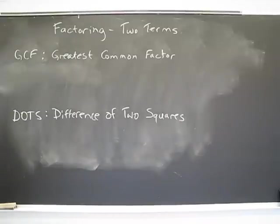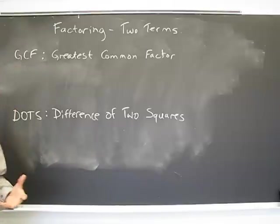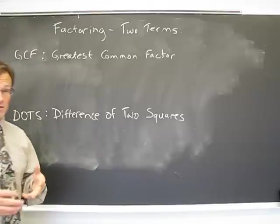So now we want to take a look at factoring, where it starts off. Factoring one term, we talked a little bit about the factors of a number. Now we want to talk about the factoring of two terms. And generally what we mean is two terms that cannot be simplified.